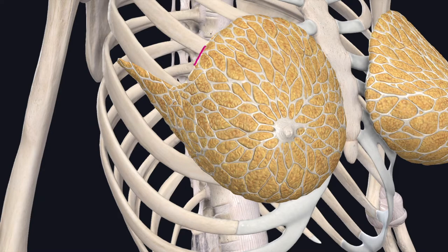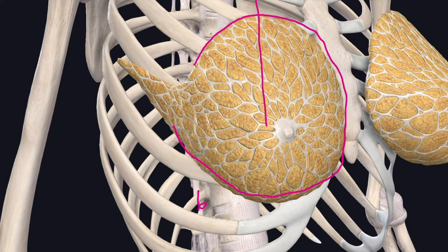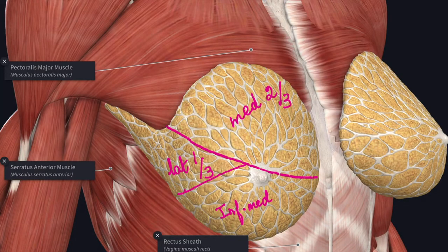The circular base extends vertically from the second rib to the sixth rib in the mid-clavicular line. Horizontally it extends from the lateral border of the sternum to the mid-axillary line along the fourth rib. This is the extent of the circular base.